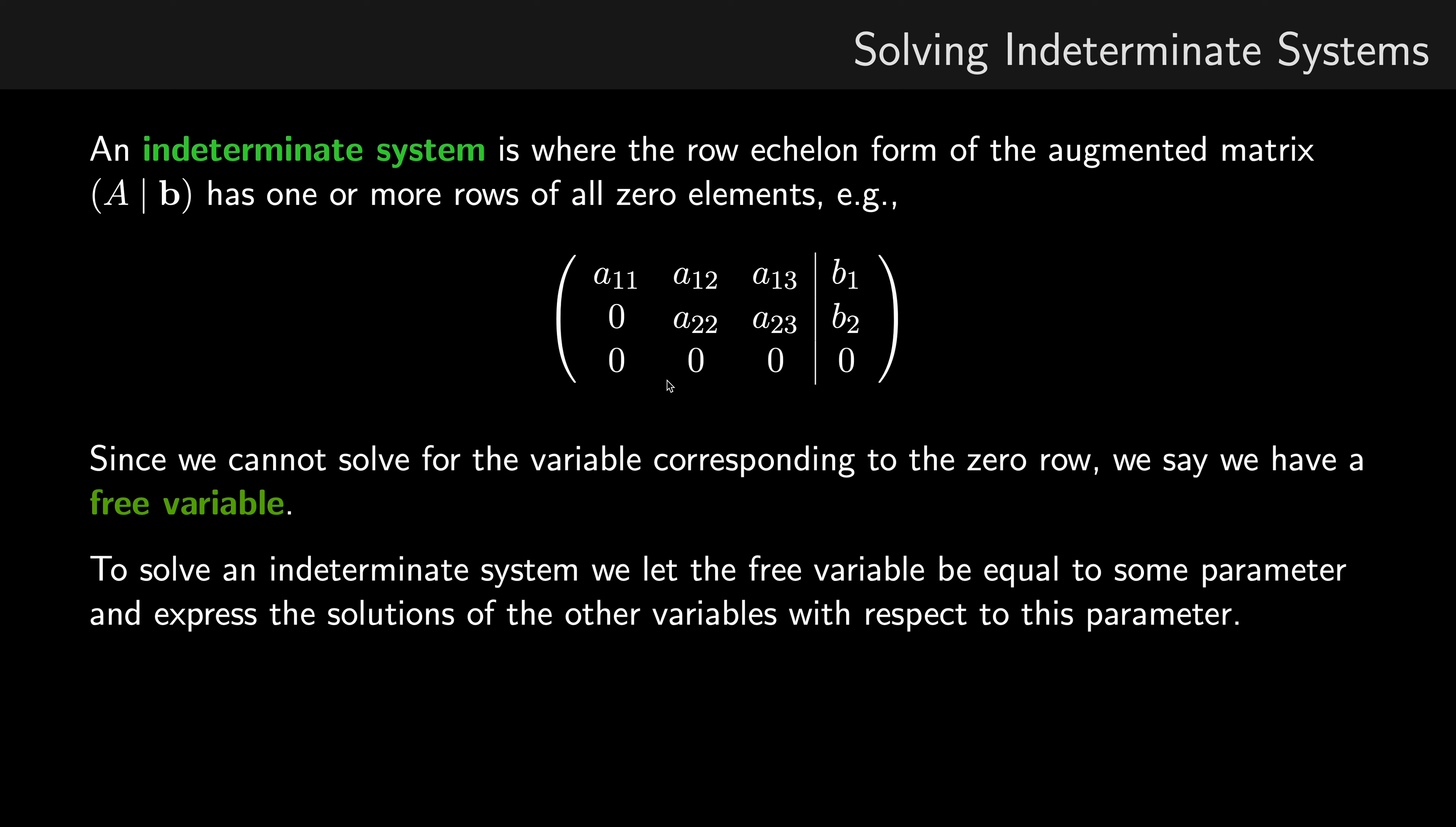Now the rank of a matrix is the number of non-zero rows when it's reduced to row echelon form. So the rank of the augmented matrix here is 2, which is less than the number of variables in the system, which is 3. So we know we've got an indeterminate system because the rank of the augmented matrix is less than the number of equations in the system.